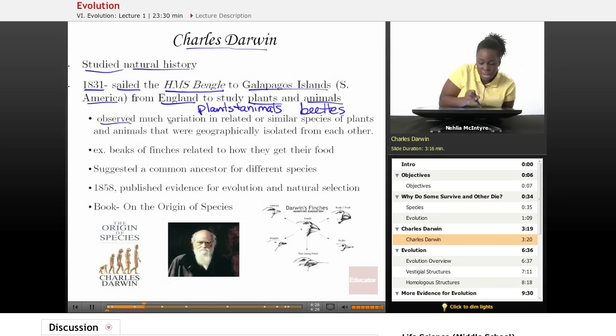He studied all the different variations of certain species to see how many different variations he could find. He observed much variation in related or similar species of plants and animals that were geographically isolated from each other. So he wanted to see why those variations occurred. He went to the Galapagos Islands and he studied several different types of plants and animals.